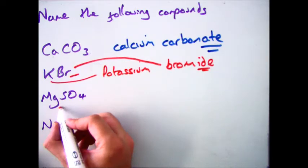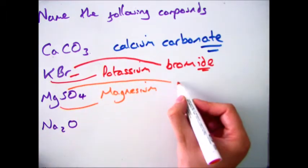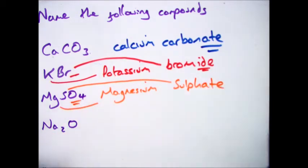The next one we have magnesium, Mg. We have sulfur, so it's magnesium sulf-, and then the oxygen makes it -ate, magnesium sulfate.